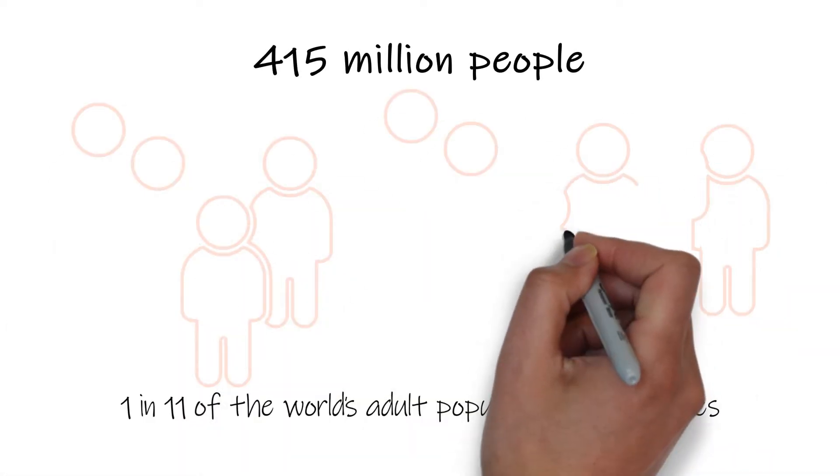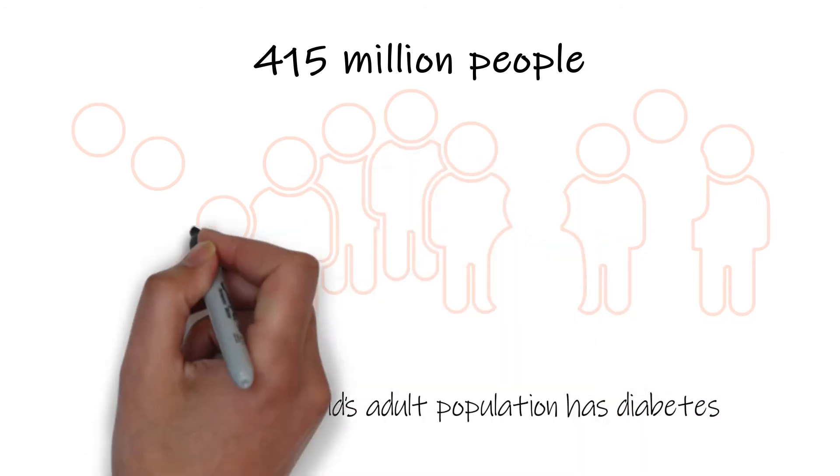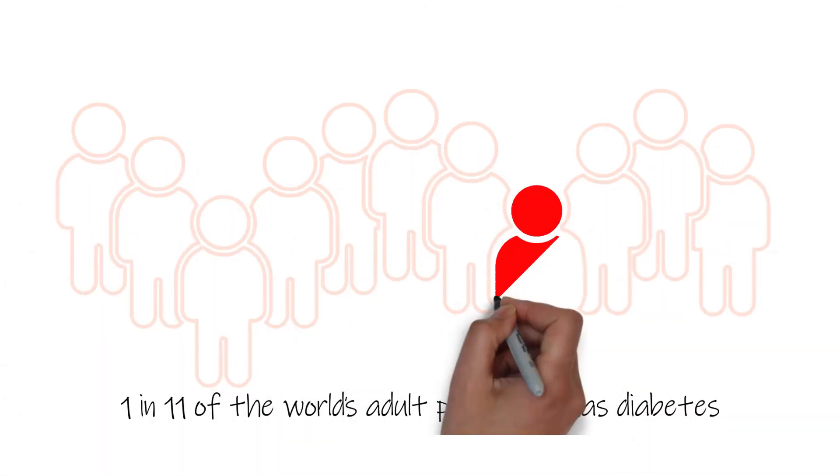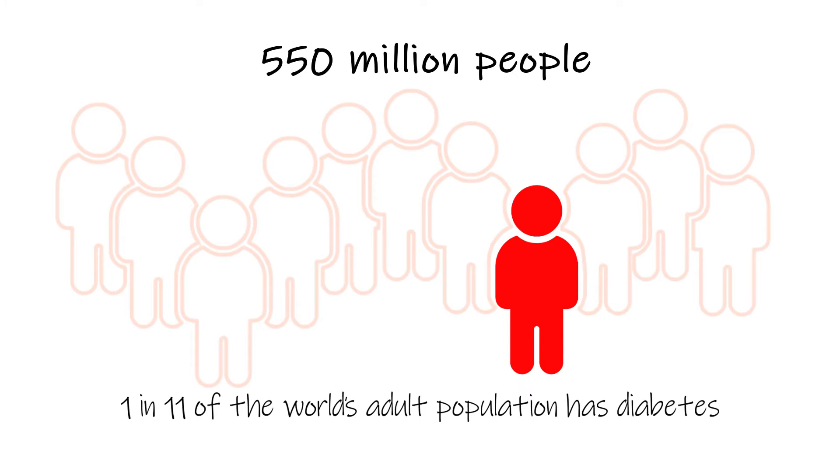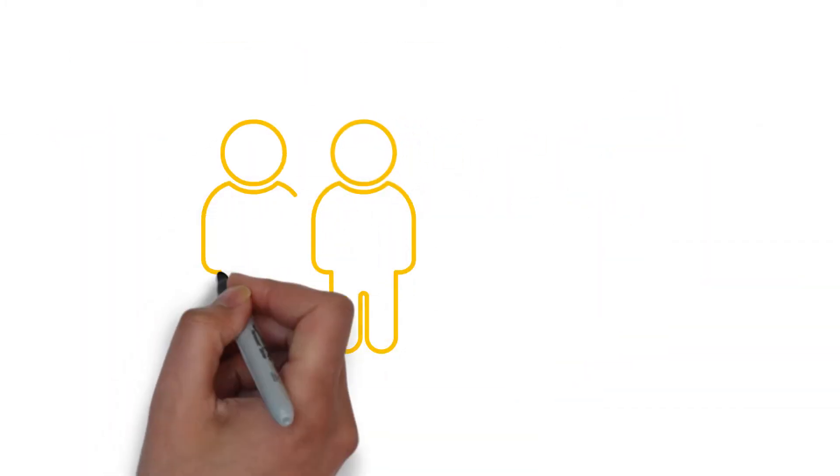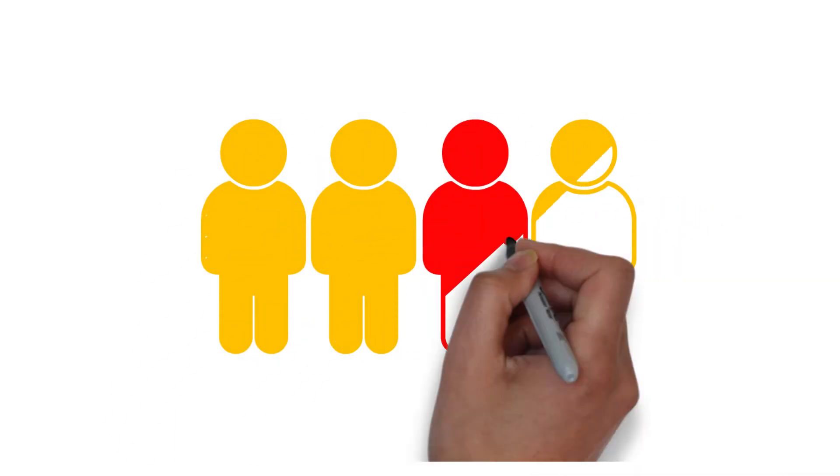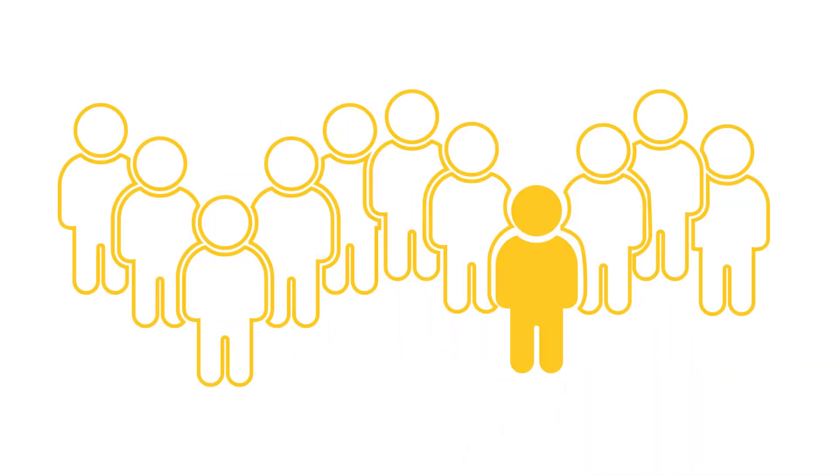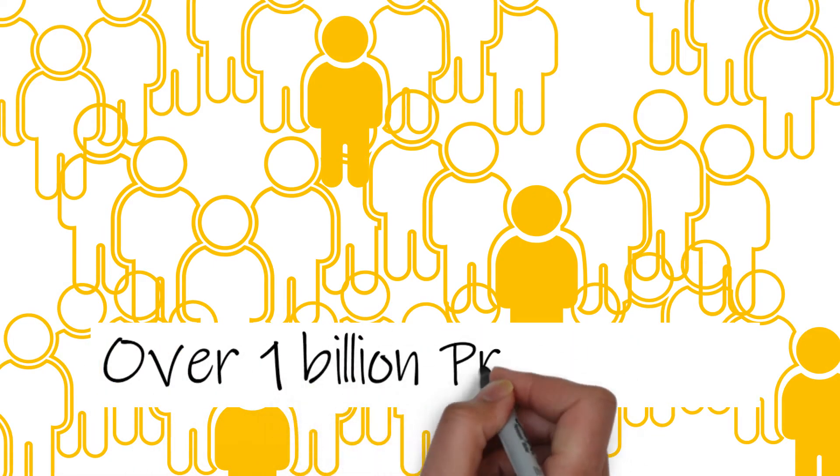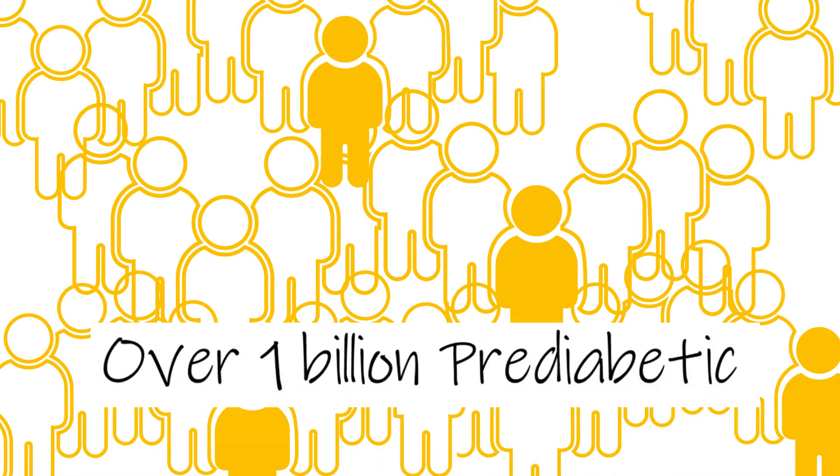That's more than 415 million people, and this number is estimated to grow to 550 million people in 2030. More alarmingly, three pre-diabetic people are estimated for every diabetic person. This works out to over 1 billion of the world's population having excess blood glucose levels.